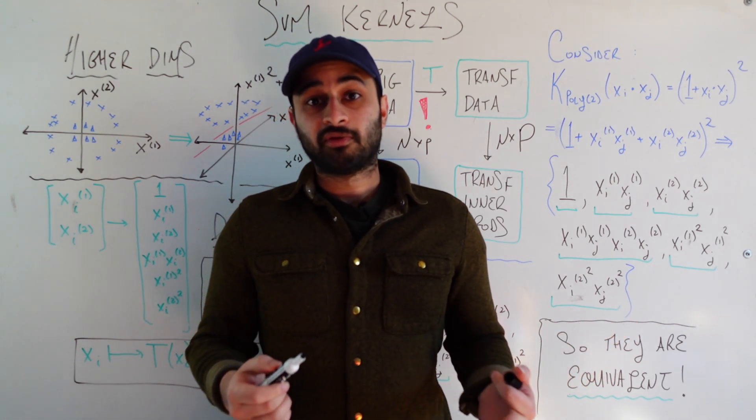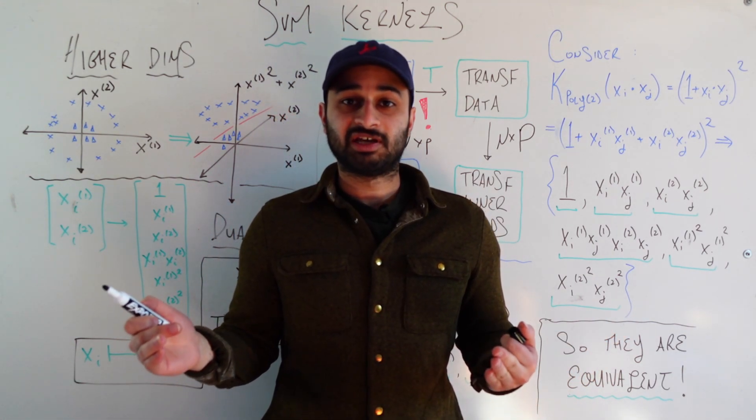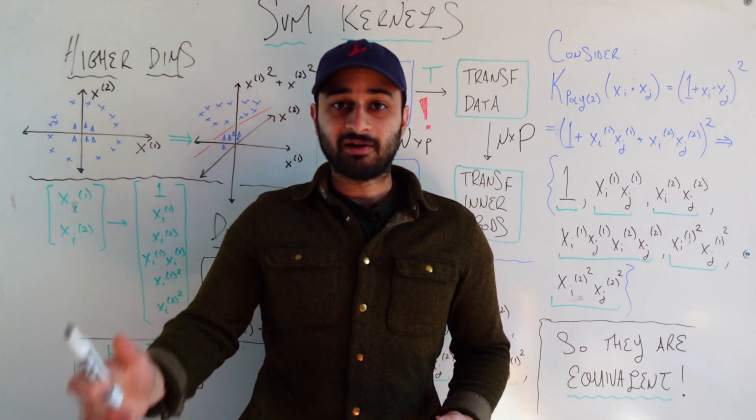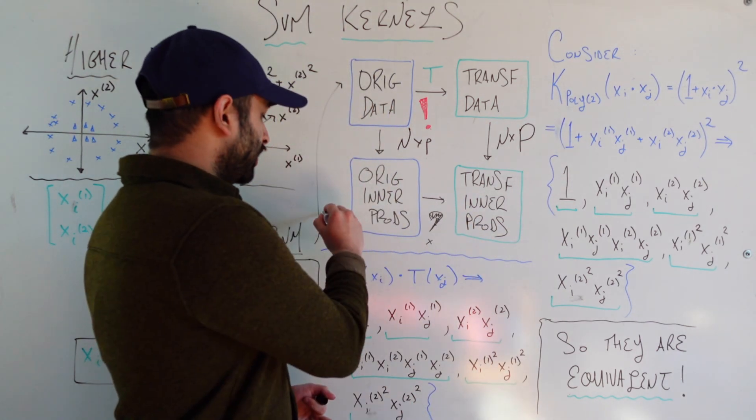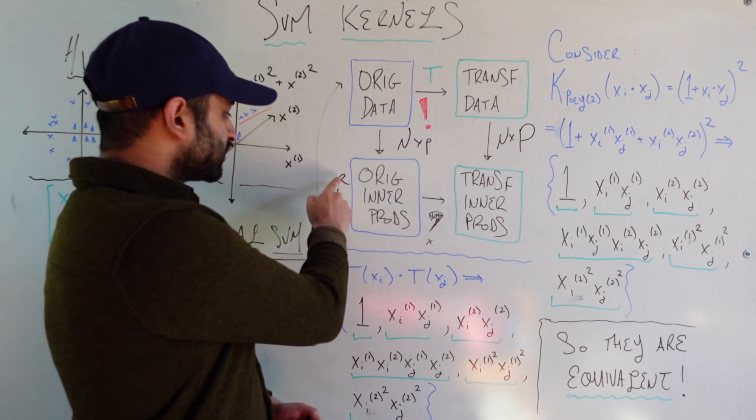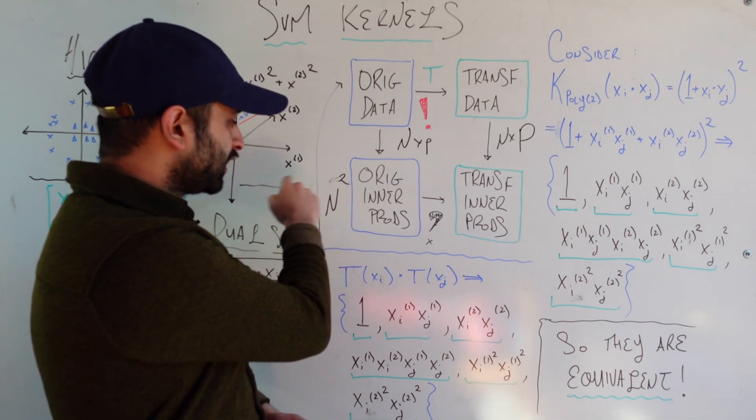If instead we take the original inner products first, by original inner products I mean we get all of the xi's dot xj's, so we haven't done any transformations yet. How many of those are there? There's n times n, because we basically need to get the inner product of every one of the n vectors with every other one of the n vectors. So this is n squared.